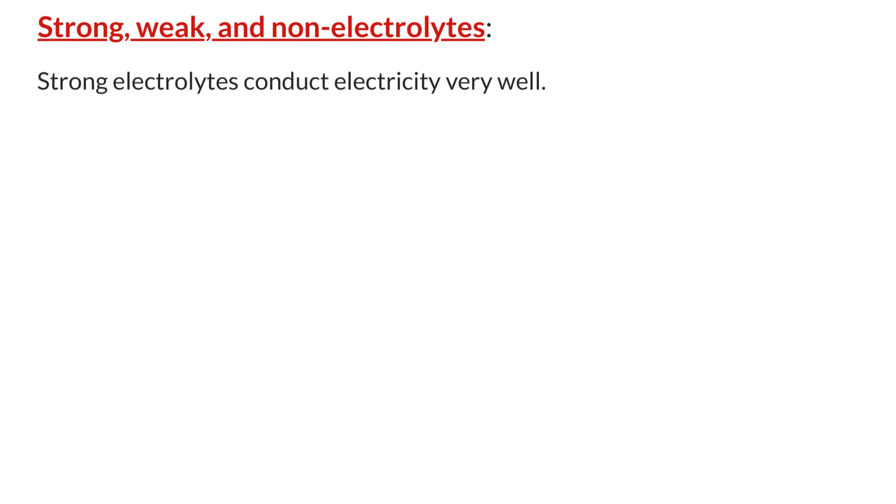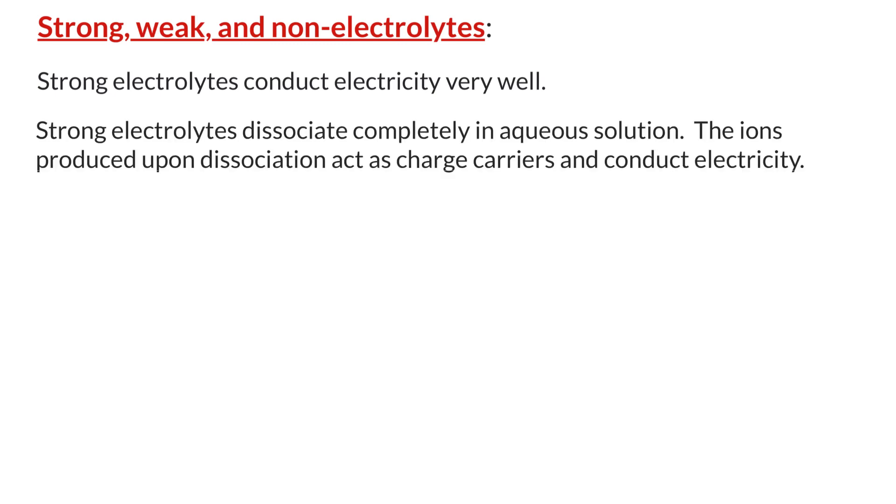Strong electrolytes conduct electricity very well. Strong electrolytes, when dissolved in water, break apart, i.e. dissociate, completely. The ions produced upon dissociation act as charge carriers and conduct electricity. Examples of strong electrolytes include soluble ionic compounds, strong acids, and strong bases. The strong acids and bases have almost 100% dissociation.